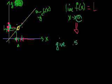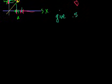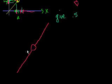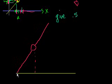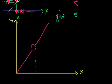Let me draw it a little bit bigger. So let's say that this is f of x — there doesn't have to be a hole there. The limit could equal the value of the function, but the limit's more interesting when the function isn't defined there but the limit is. So let me draw the axes again: x-axis, y-axis. This is the limit point L, and this is the point A.